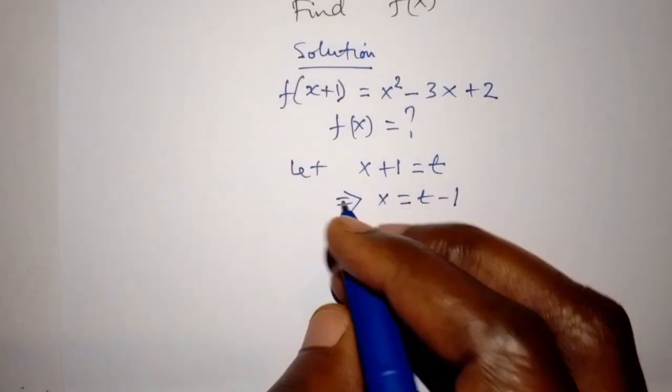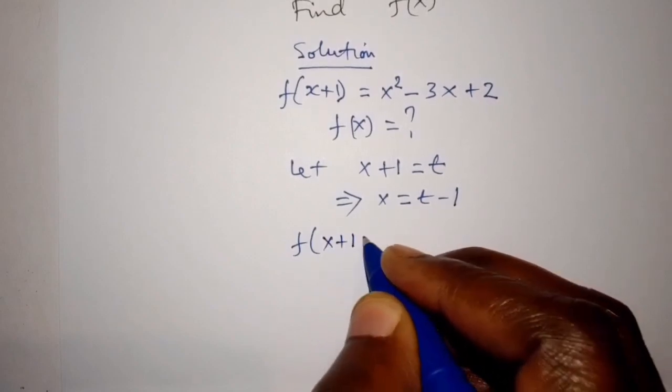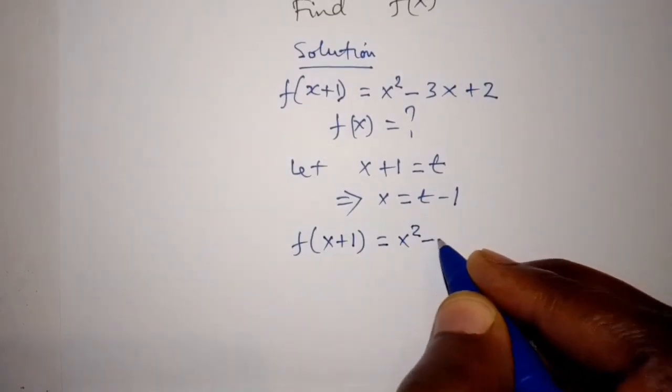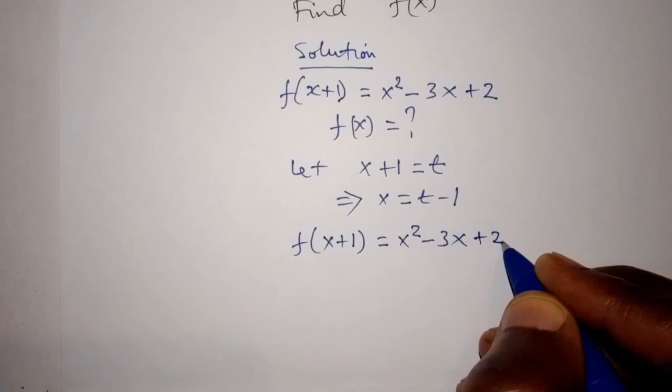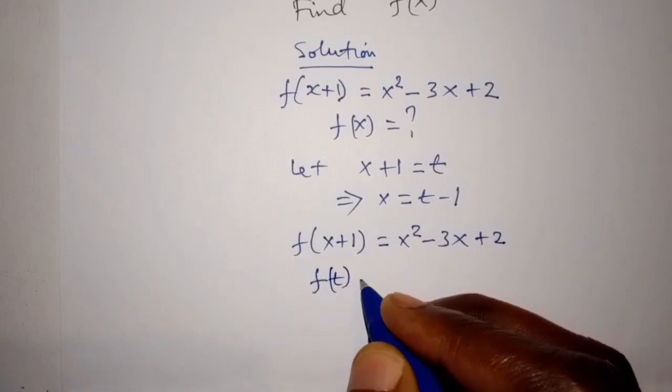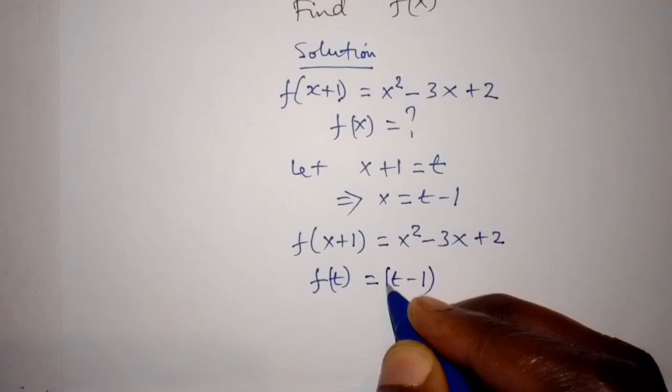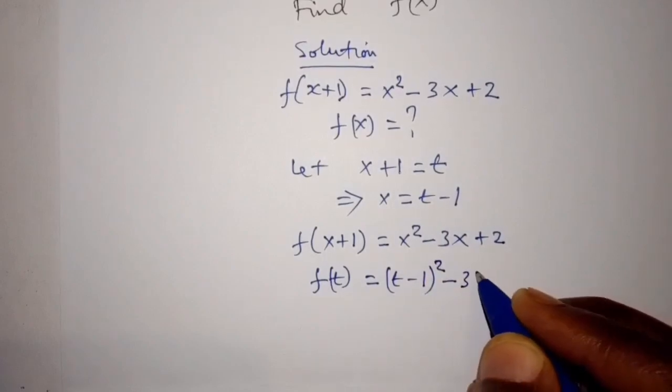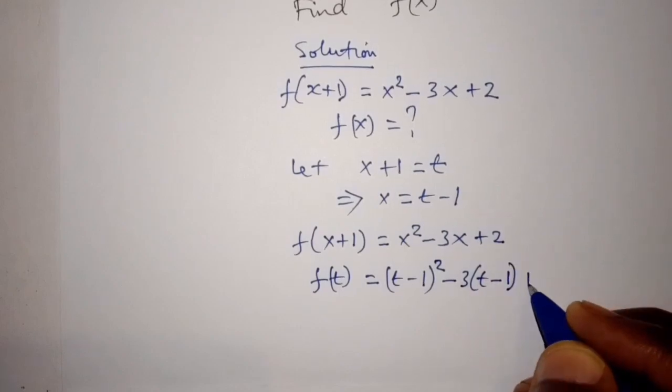And we are given f of x plus 1 is equal to x squared minus 3x plus 2. This will give us f of t is equal to t minus 1 squared minus 3 times t minus 1 plus 2.